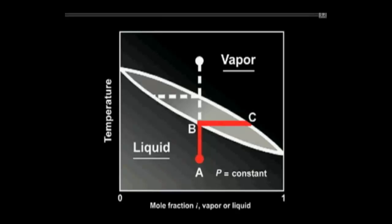the vapor composition moves from C to D and the liquid composition from B to E. When the last remaining liquid disappears, the dew point has been reached,